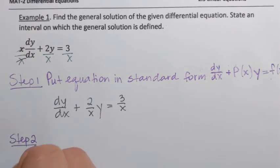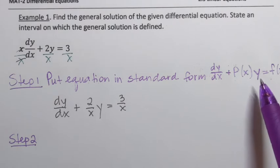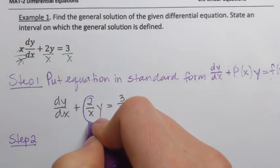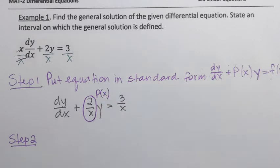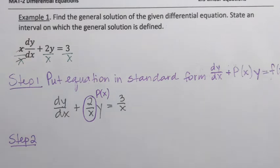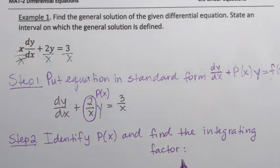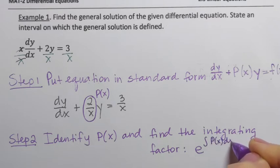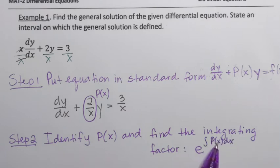In step two, we first identify P of x — it's whatever is in front of y when the equation is in standard form, so P(x) = 2/x. Then we find the integrating factor. The integrating factor always has the form e raised to the power of the integral of P(x) dx, so the integral of P(x) is the exponent of e.